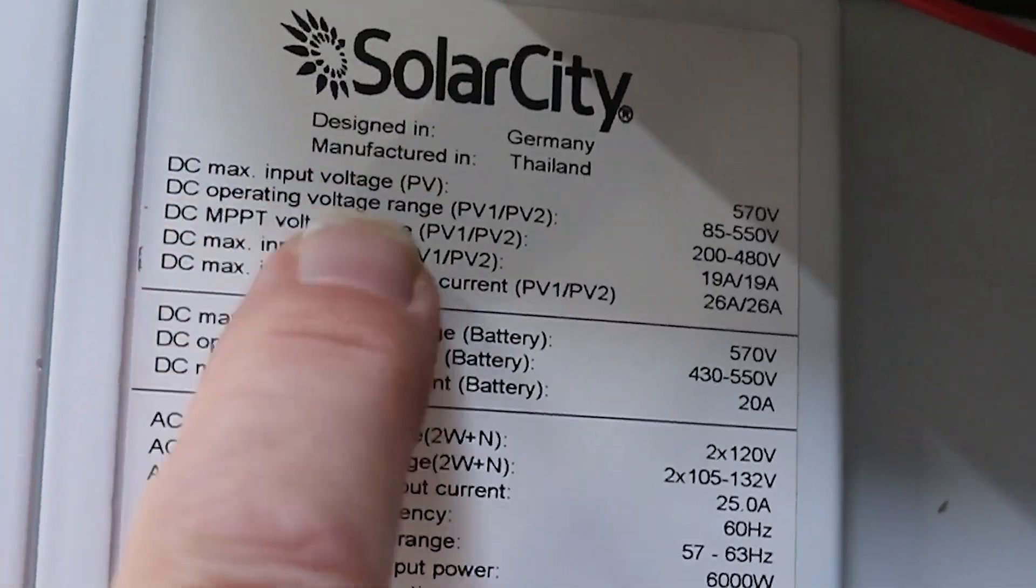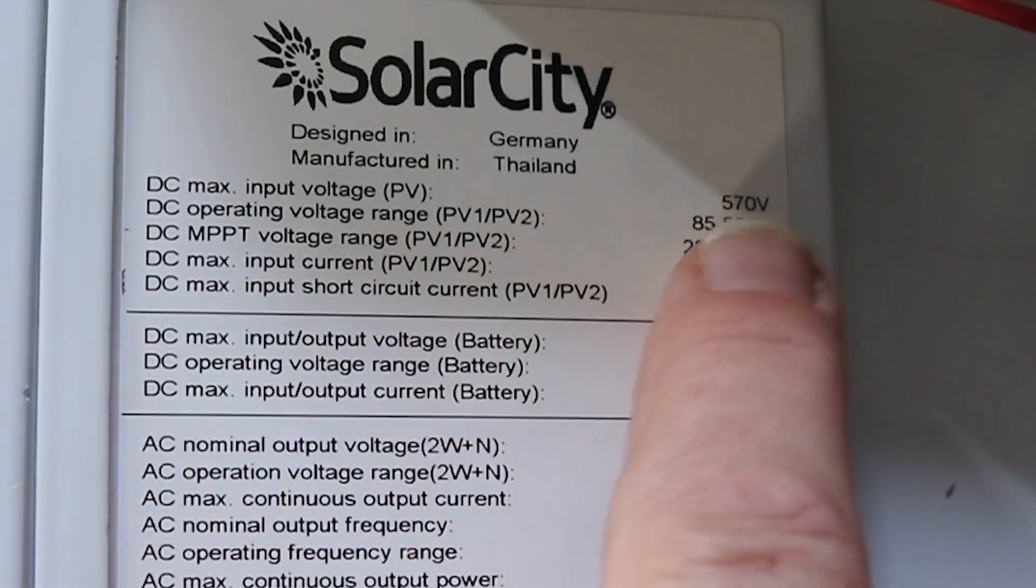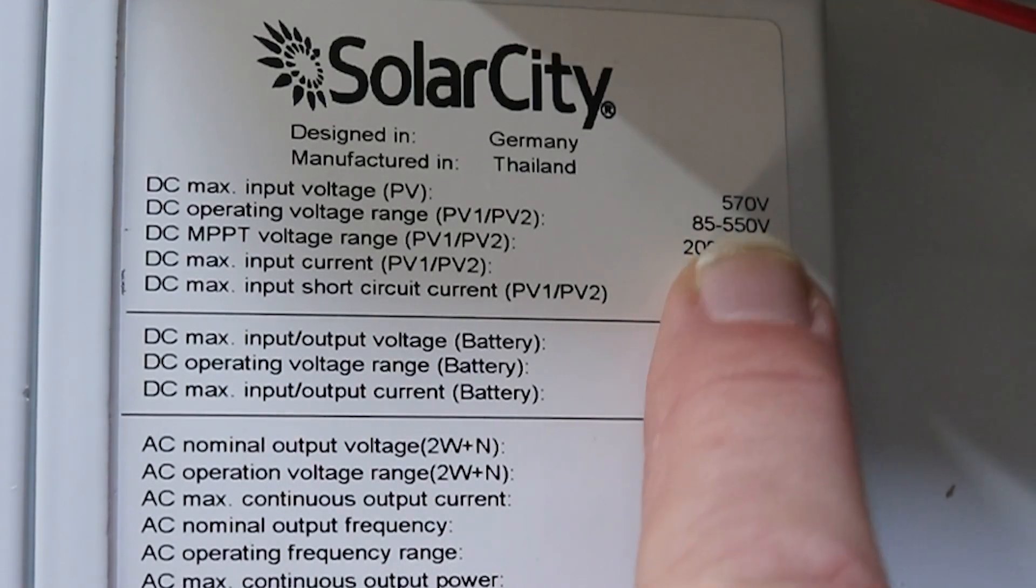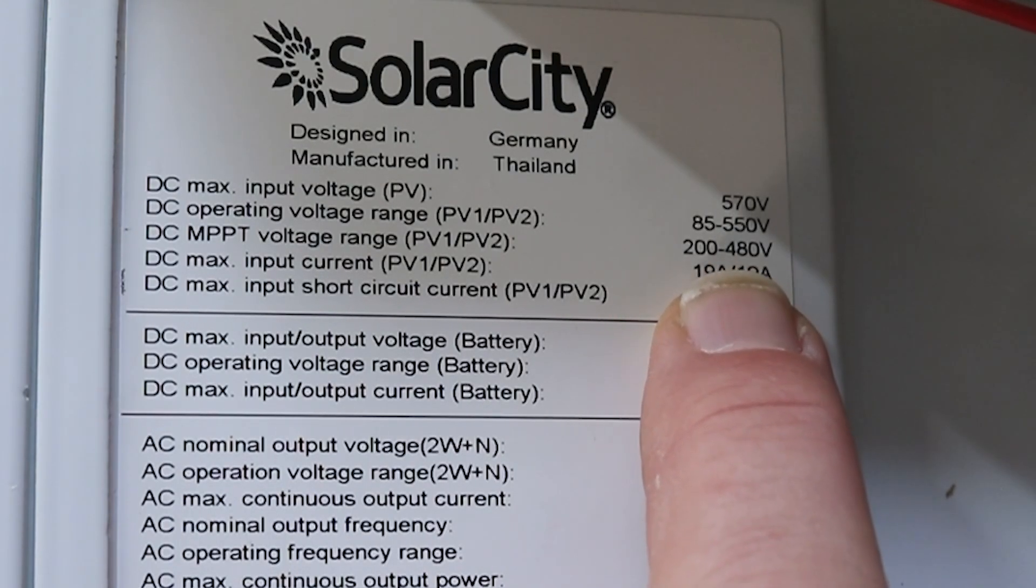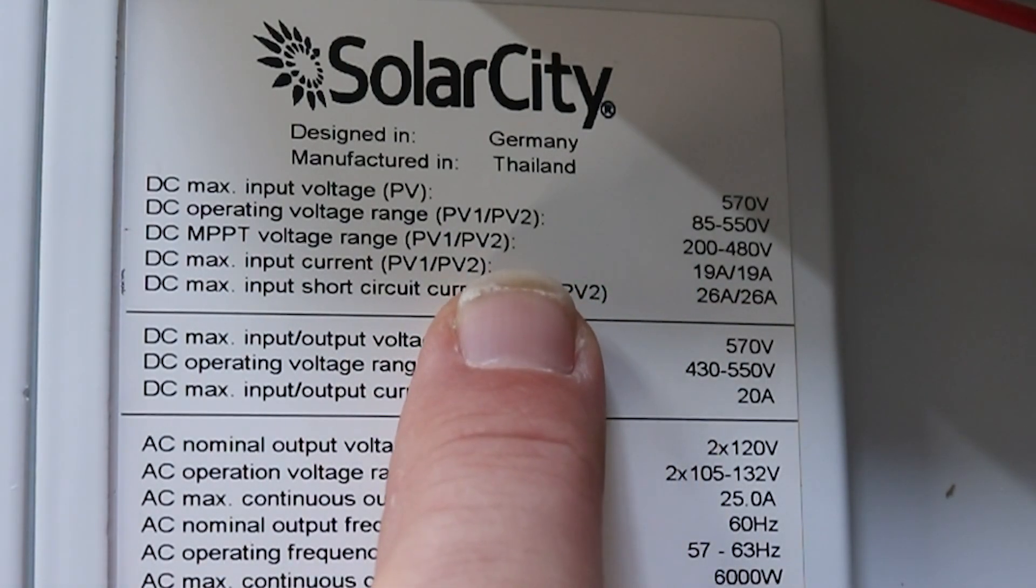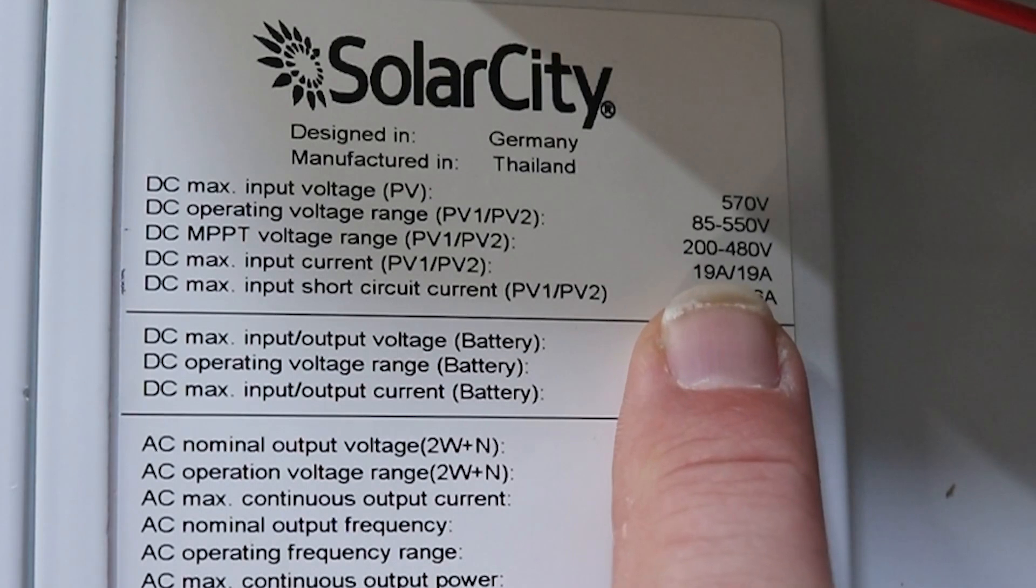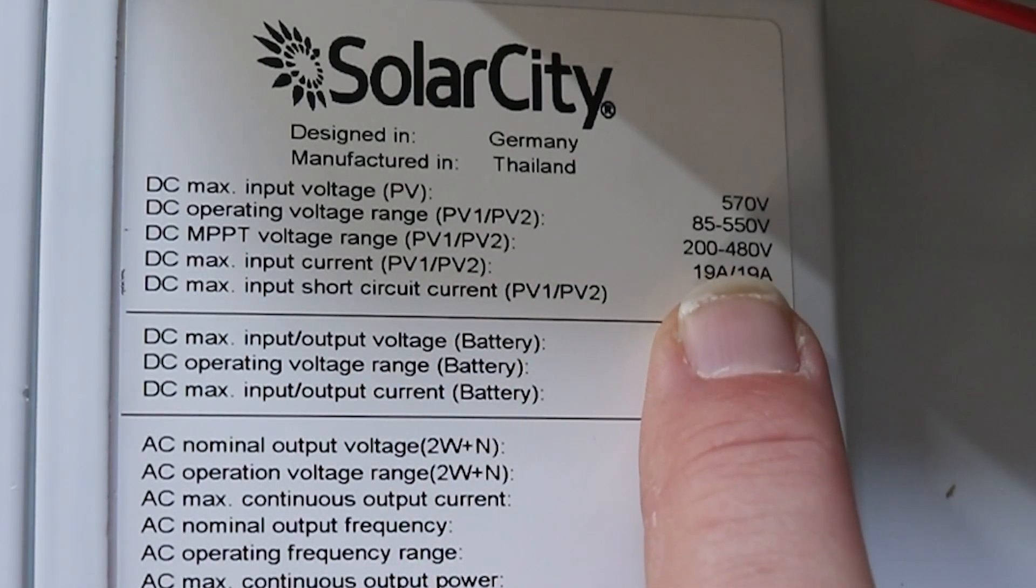But if we look up here, DC input voltage for the solar has a maximum of 570 volts and a range of 85 to 550 volts for our typical operating range. And what's interesting about that is most electric cars have a battery voltage of around 360 volts. So in theory we should be able to connect an electric car battery pack to this. I don't want to try that yet without doing some testing first. So let's run some lower voltage DC in here to start. Let's say about 150 volts.